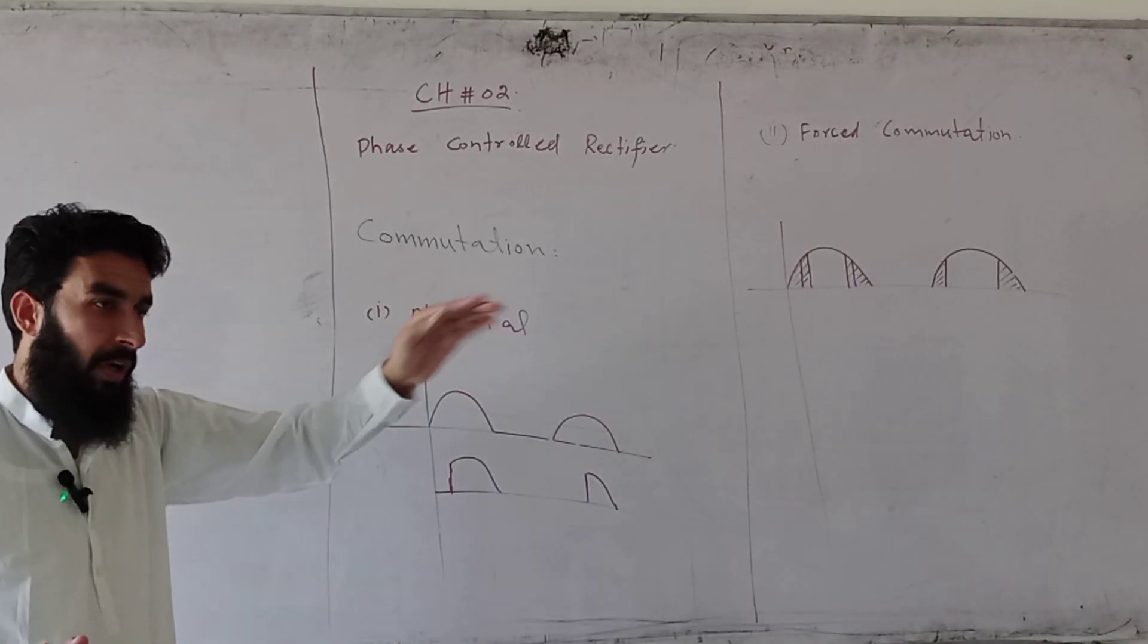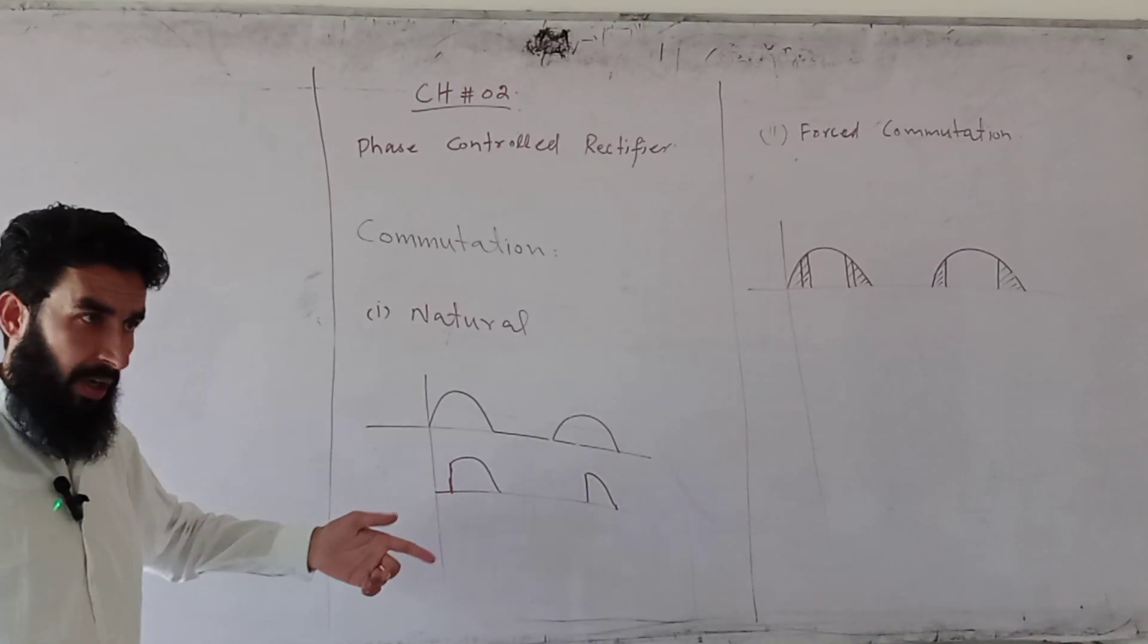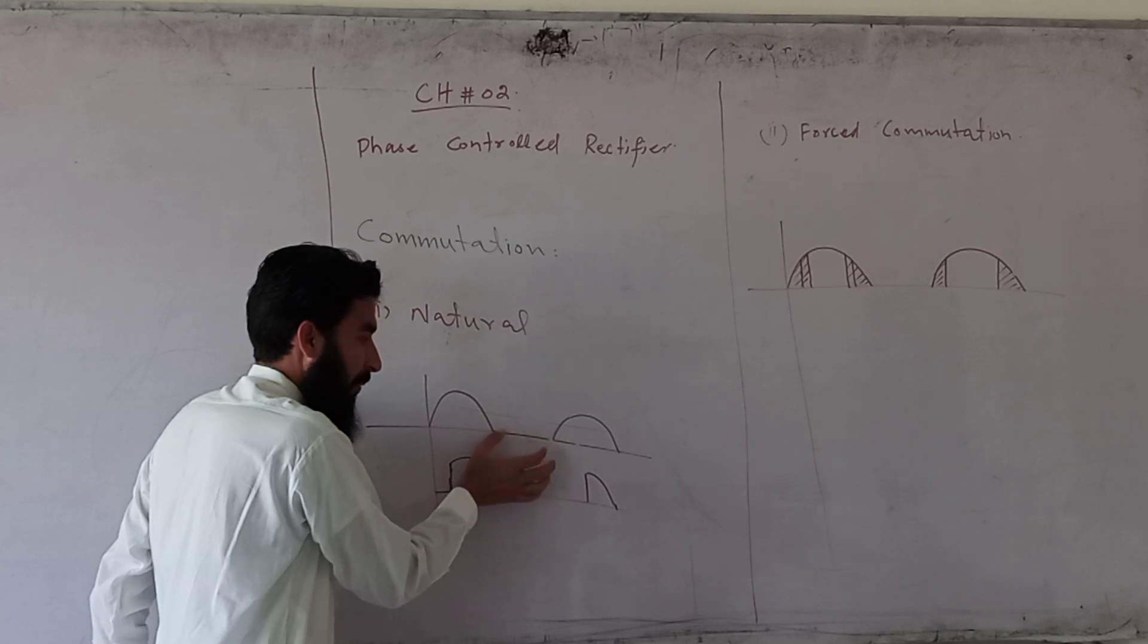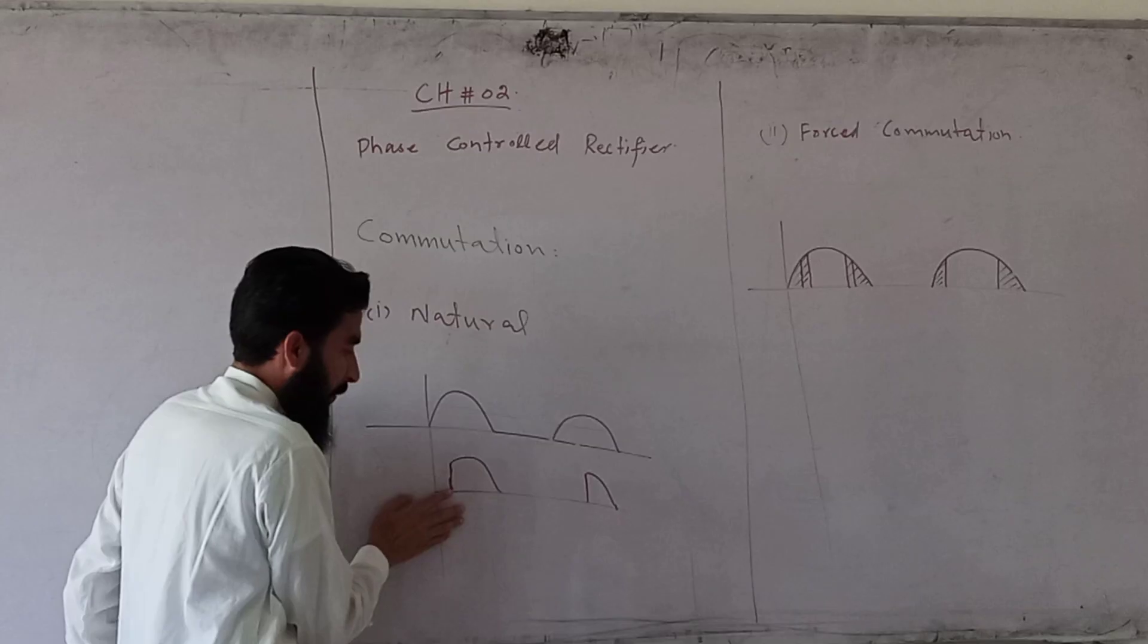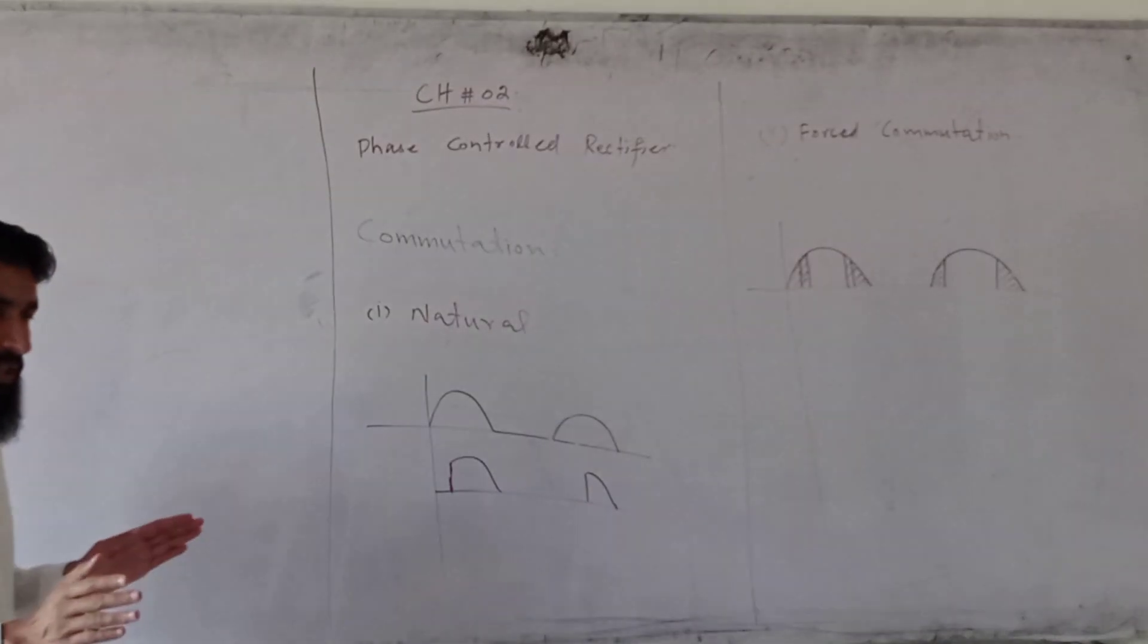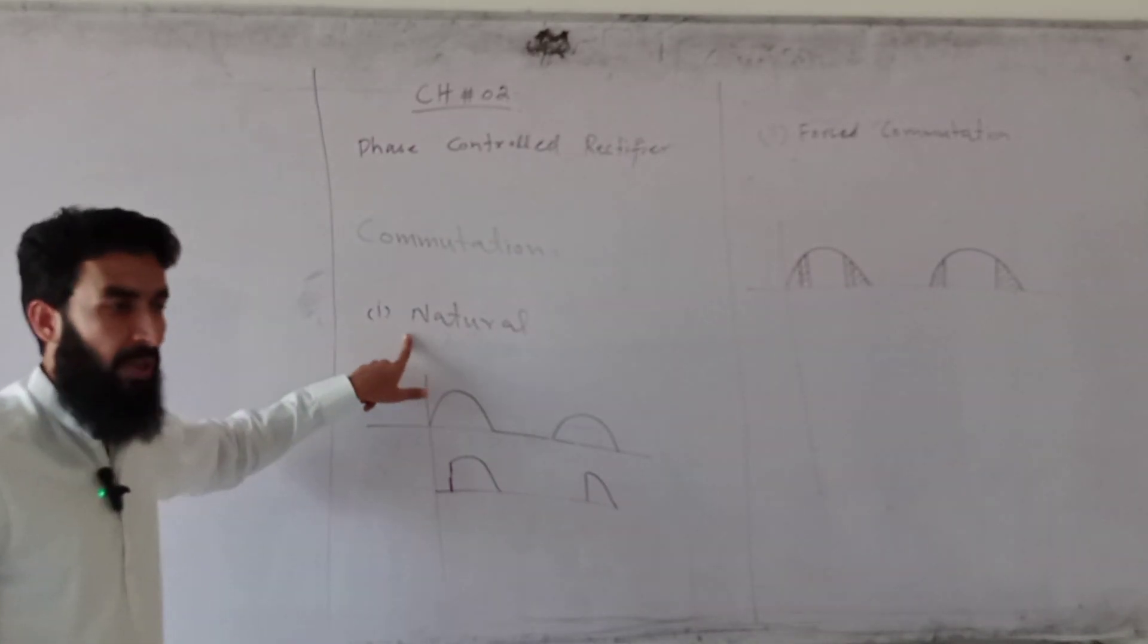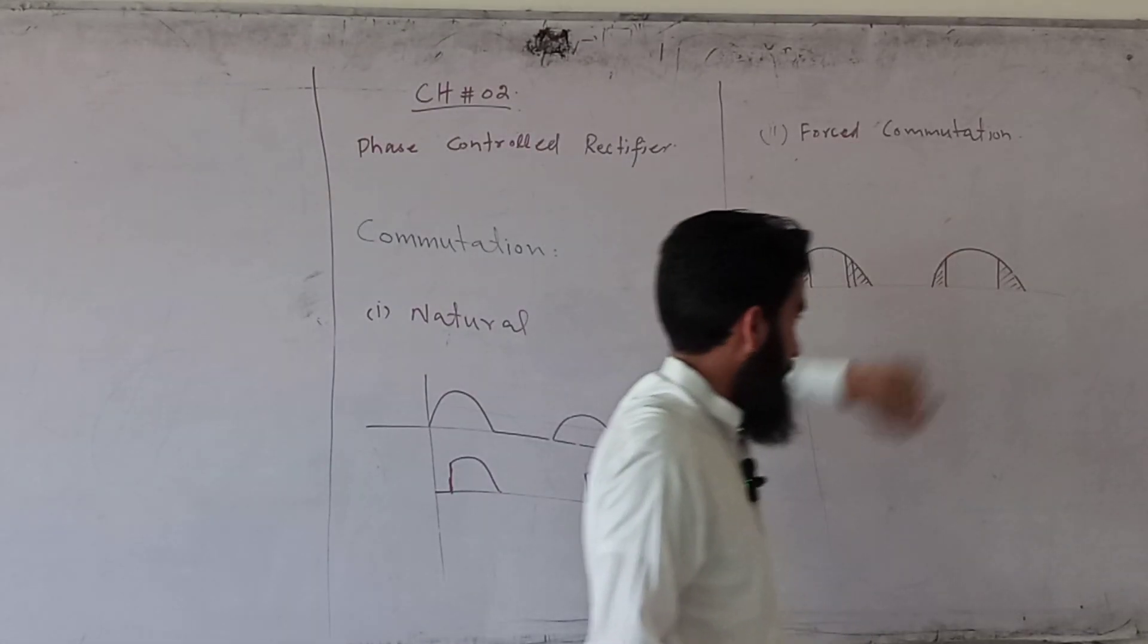You can use diodes for natural commutation. You need to consider the firing angle when using it. Natural commutation, and next one is forced commutation.